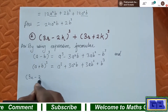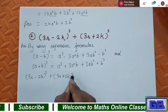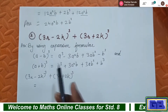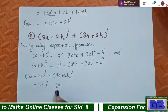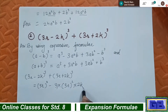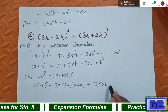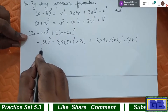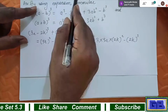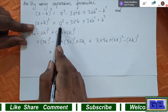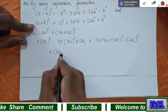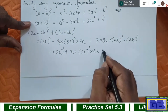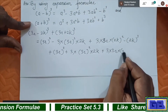Take the question: (3r - 2k)³ + (3r + 2k)³. Use the minus formula first: a = 3r, b = 2k. So (3r)³ - 3 × (3r)² × 2k + 3 × 3r × (2k)² - (2k)³. Leave a little space, then plus sign, and use the plus formula: (3r)³ + 3 × (3r)² × 2k + 3 × 3r × (2k)² + (2k)³.